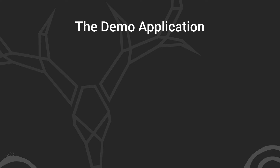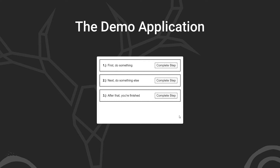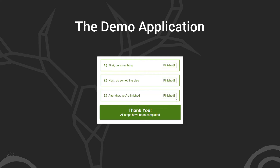Before we do anything, let's take a look at the example application we'll be working with in this video. We have a simple application with a list of items to complete. We can mark the items complete by clicking the button next to each step. And when all items have been marked complete, we display a message notifying the user that everything is done. This app is in the process of migrating to signals, and in this video we're going to convert it over the rest of the way. In the process, we'll need to update a host binding on our list items based on a signal input.